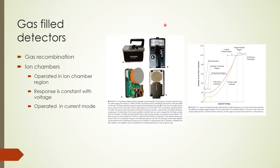A gas-filled detector can be operated in various response regions depending on the applied voltage between the electrodes. The voltage-response curve shown on this slide illustrates the different regions of operation. We shall start with the recombination and ion chamber regions. When ion pairs are produced in a gas, if the applied voltage is not high enough, the ion pairs recombine — this region is called the recombination region. When the voltage is increased until the ions are no longer recombining, we enter a plateau region called the ion chamber region. In this region, the response does not change significantly with voltage. Ion chambers are operated in the ion chamber region in current mode and can be used in high radioactivity environments.